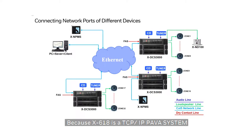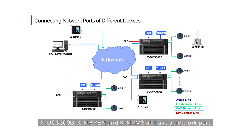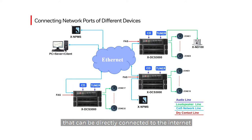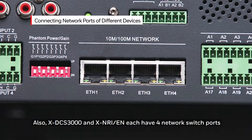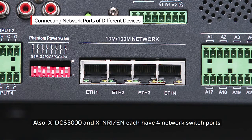Because the X618 is a TCP/IP PAVA system, the XDCS3000, the XNRIEN, and the XNPMS all have a network port that can be directly connected to the internet. Also, the XDCS3000 and the XNRIEN each have four network switch ports.